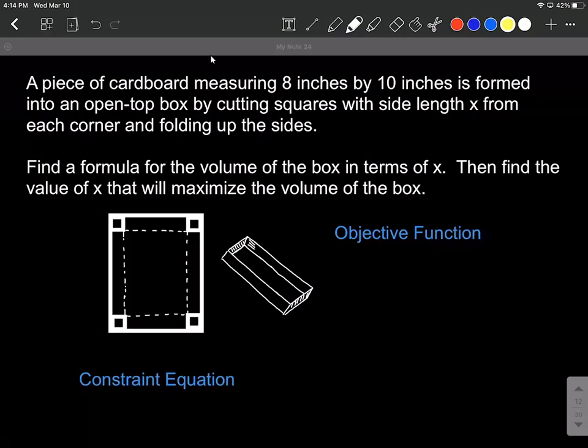All right, let's work on an optimization problem where we're going to build a box. We have a piece of cardboard measuring 8 inches by 10 inches, and we're going to form it into an open top box by cutting squares with side length x from each corner and folding up the sides.